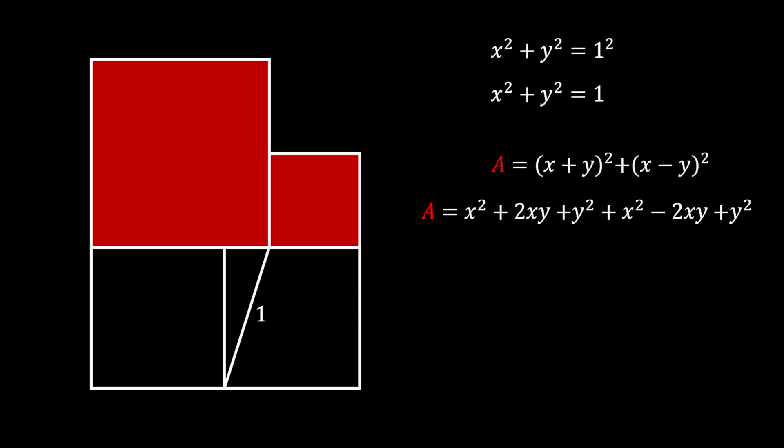Now, we can simplify this by first cancelling the second and the fifth term, and then we will get that the area is equal to 2x squared plus 2y squared. Now, we can simplify further to get that area is equal to 2 times x squared plus y squared.